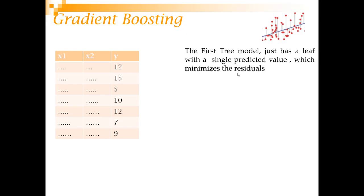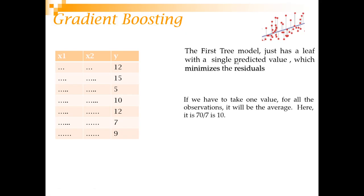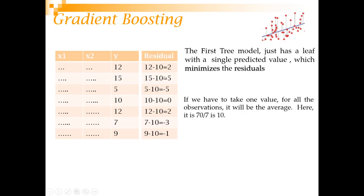Residuals are the actual minus predicted values — if the red circles represent actual values and you fit a line, the perpendicular distance is your residual. So, if we take one value for all observations, the value that minimizes the residuals is simply the average of the seven values. Adding them up gives 70, so the average is 10. Calculating residuals: 12 minus 10 equals 2, 15 minus 10 equals 5, and so on down to 9 minus 10 equals minus 1.